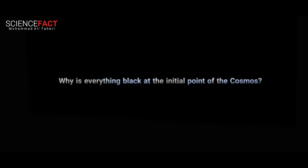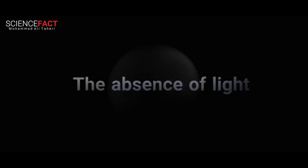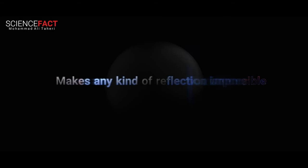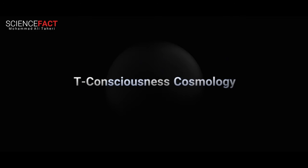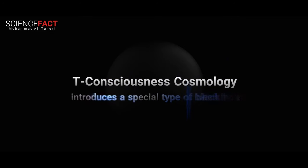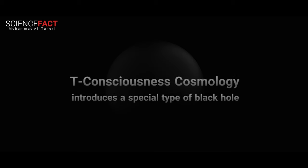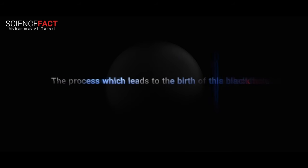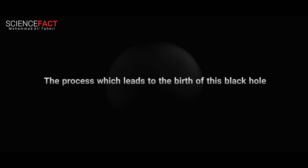Perhaps now you understand better why everything is black at the initial point of the cosmos. It is because the absence of light makes any kind of reflection impossible. T-Consciousness cosmology introduces a special type of black hole that is different from all other black holes we know. Here, we will examine the process that leads to the birth of this black hole.